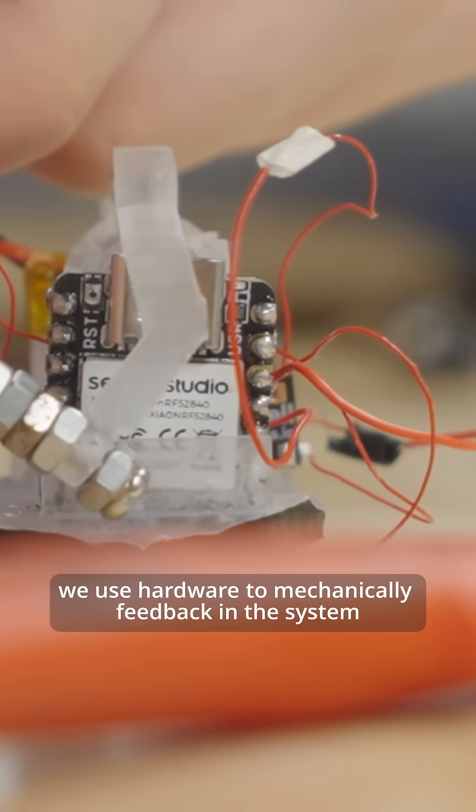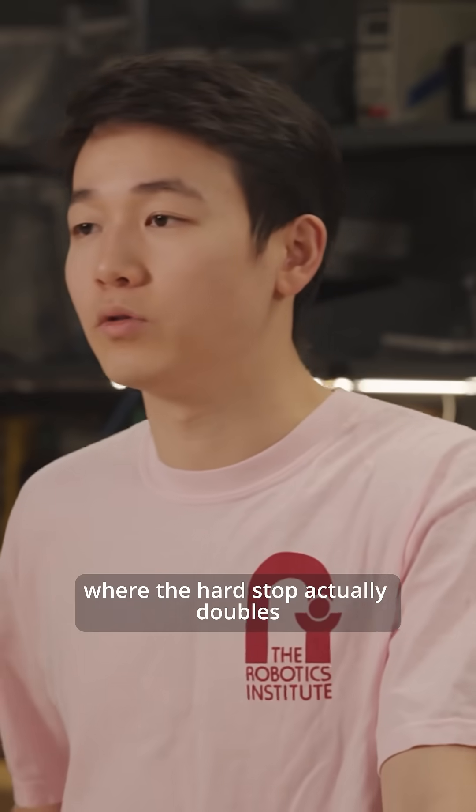To solve this problem, we use hardware to mechanically feedback in the system, where the hard stop actually doubles as both a joint limit for the hip, as well as mechanically feedback to regulate the leg speed.